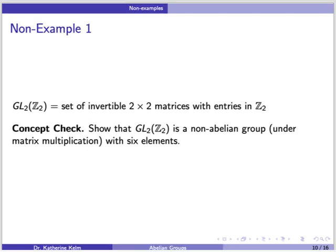Our next non-example: let's consider GL_2(Z_2), the set of invertible 2 by 2 matrices with entries in Z_2. As a concept check, show that GL_2(Z_2) is a non-abelian group under matrix multiplication with six elements.